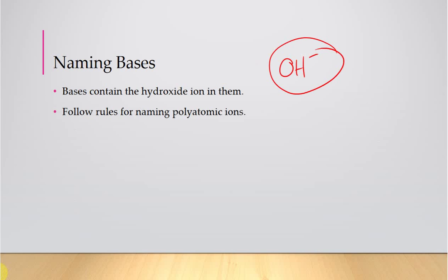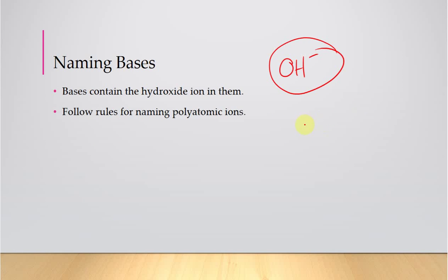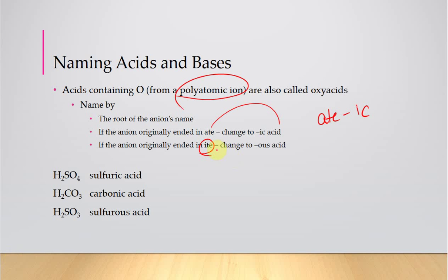A shortcut for remembering the acid naming: if you've ever eaten something and felt icky — ate-ick. And if you do this long enough you typically feel sick — you might have an itis. So: ate becomes -ic acid, and ite becomes -ous acid. That's how I remember it.